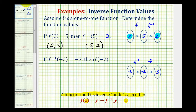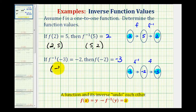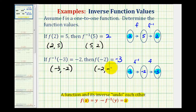Again, notice how the initial input and the final output are the same. This also tells us that the inverse function contains the point with an x-coordinate of negative three and a y-coordinate of negative two. And this tells us the function contains the point with an x-coordinate of negative two and a y-coordinate of negative three. Again, notice how the coordinates have been switched.